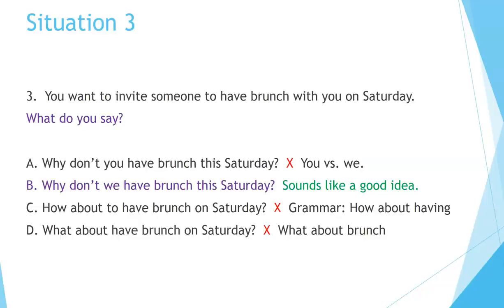The best answer is B: Why don't we have brunch this Saturday? Sounds like a good idea. What's wrong with the others? A. Why don't you have brunch this Saturday? — Again, we have the problem with 'you' or 'we.' If you say 'Why don't you,' you're giving them a suggestion. If you say 'Why don't we,' you're inviting them to do something. C. How about to have brunch on Saturday? — The grammar is incorrect. It should be 'How about having brunch?' D. What about have brunch on Saturday? — The grammar is also incorrect. You can say a shorter version like: What about brunch on Saturday?